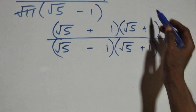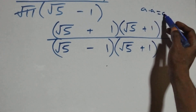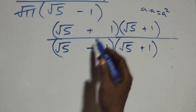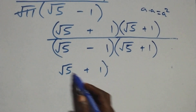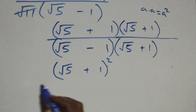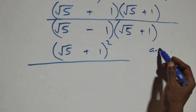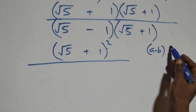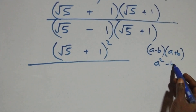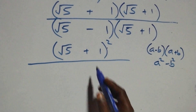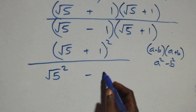This follows when we have something like a times a, which is a squared. So we can rewrite the numerator as (root five plus one) squared, divided by the denominator which follows from (a − b)(a + b), which equals a squared minus b squared.